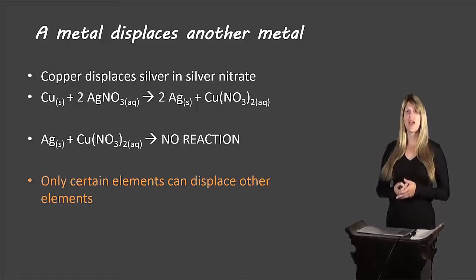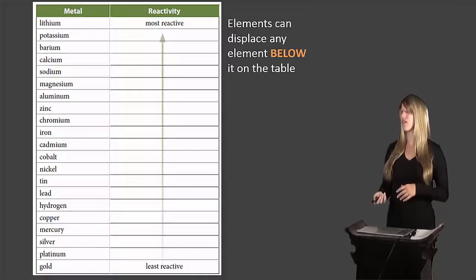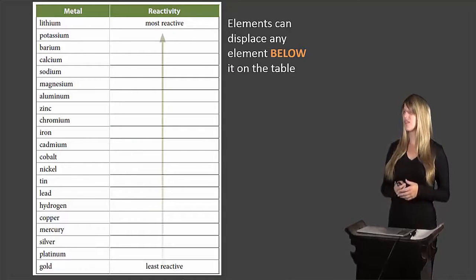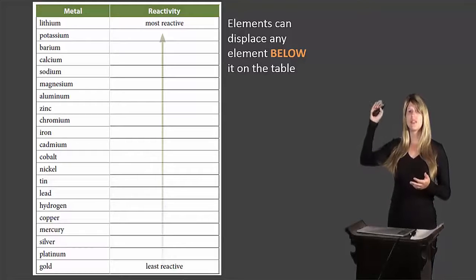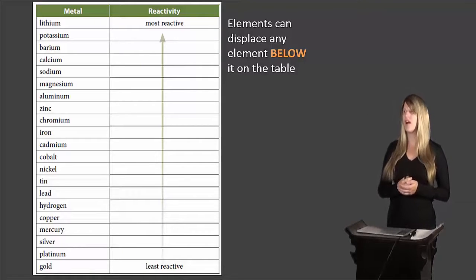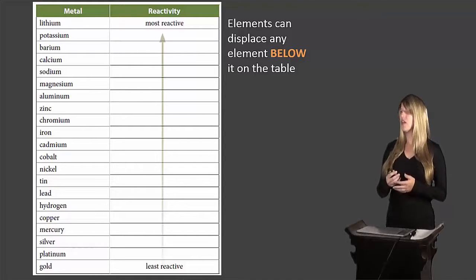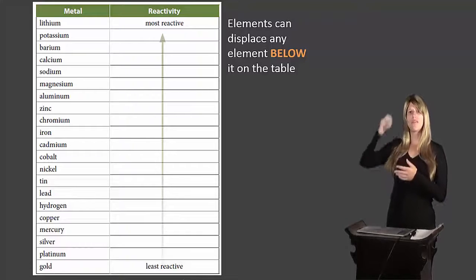This has to do with what we call the reactivity series. Certain elements are more reactive than others, and they've been ranked in order. We can use this series to determine which elements will displace other elements — elements can displace elements that are below them on the table. Lithium is at the top and can displace any metal below it. Gold is at the bottom and cannot displace any metal above it. Iron is in the middle — it can displace cadmium down to gold, but not the elements above it.